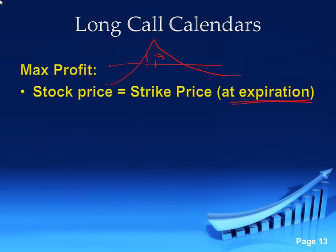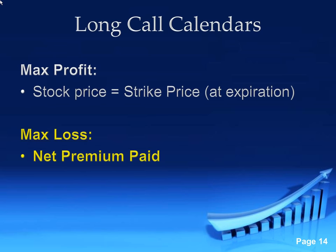If you're picking at-the-money, you want it to stay right there for the duration of that front expiration cycle. Your max loss — the beauty of this — is the premium paid. Anytime you're doing a debit, it's the premium paid. The P&L will level off at the same level to the upside and downside. So we know exactly how much we could lose, which makes it a nice trade especially in an environment like this compared to short calls or short puts, which have much different risk parameters.